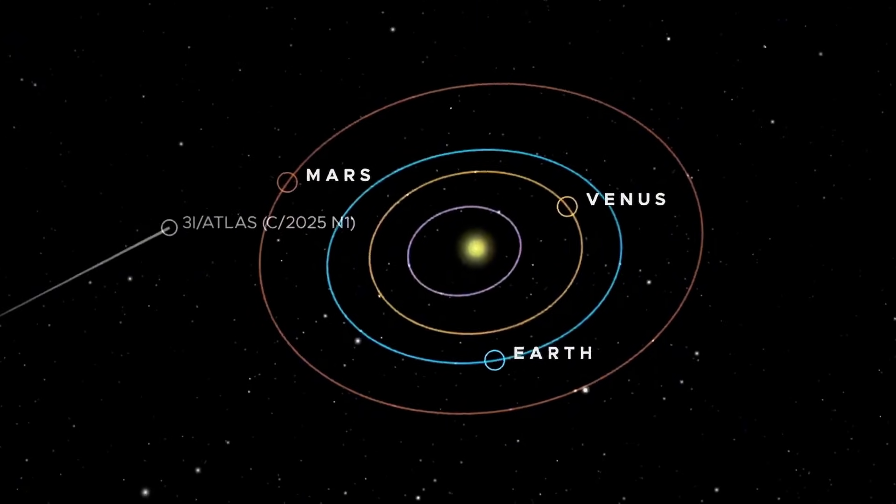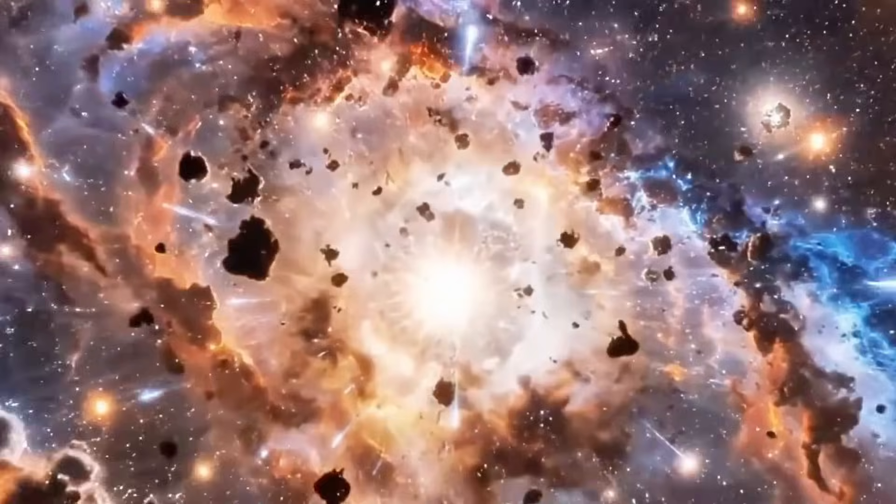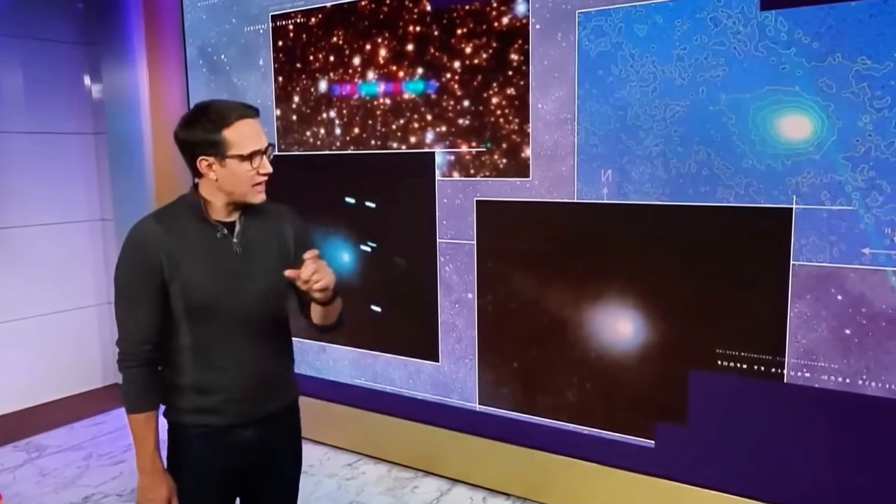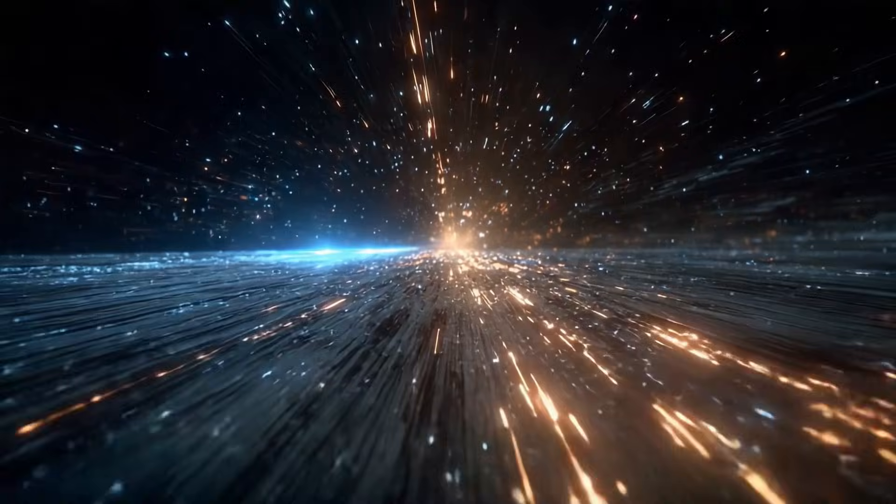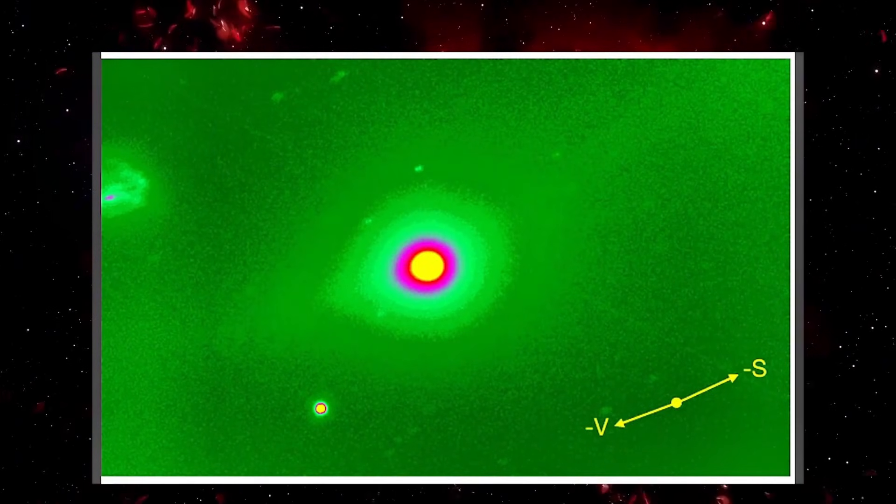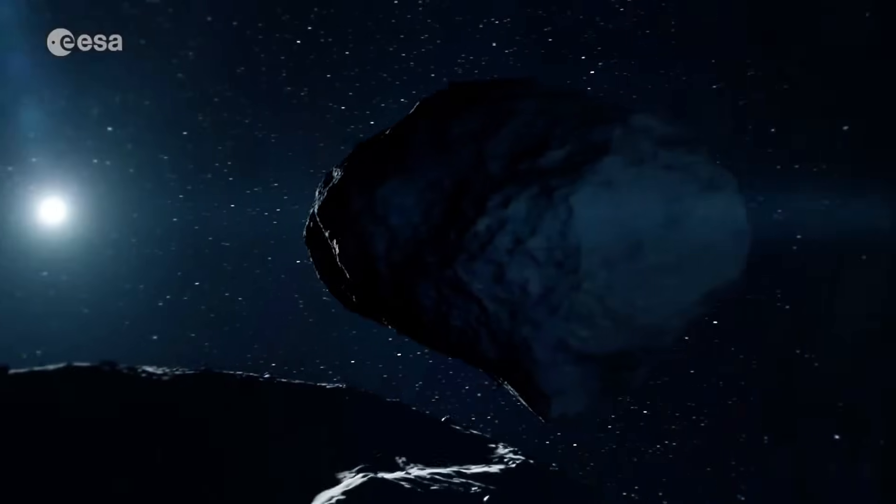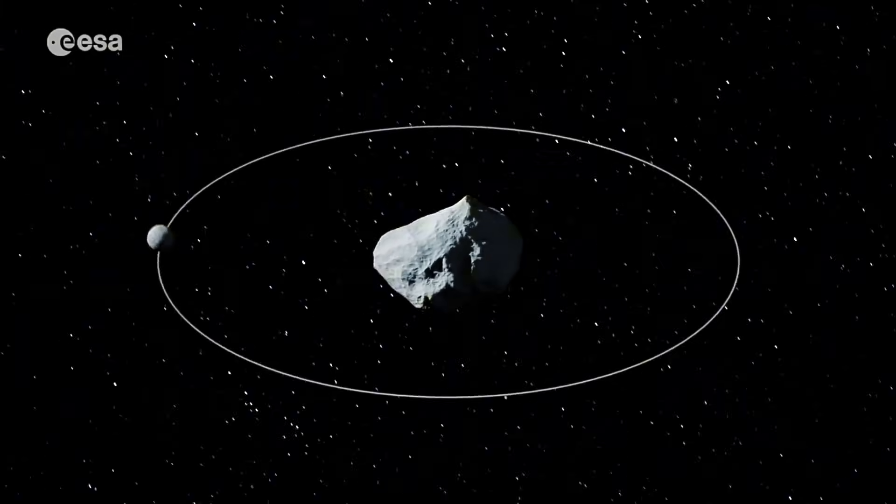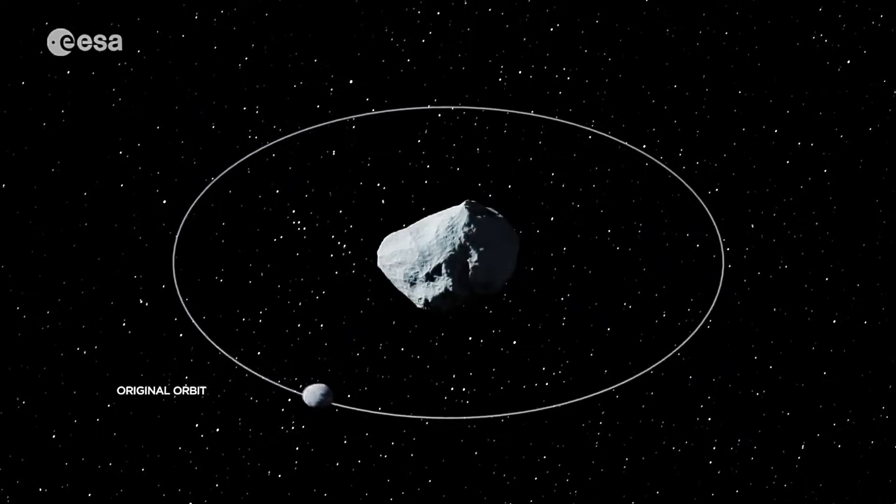For context, we need the 3i Atlas discovery timeline. July 1st, 2025. ATLAS survey detection. Immediately unusual. Brightness abnormal. Activity unexpected. And trajectory? Hyperbolic. Not a solar system object. Interstellar origin confirmed. Third confirmed visitor after Oumuamua, after Borisov. But different from both.